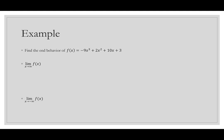Let's try one more: f(x) = -9x^3 + 2x^2 + 10x + 3. The highest power is -9x^3. Because it's negative, when x goes to infinity, f(x) goes to negative infinity. The power is 3, which is odd — odd says opposite — so the opposite of negative infinity is positive infinity. The limit as x goes to negative infinity is positive infinity.